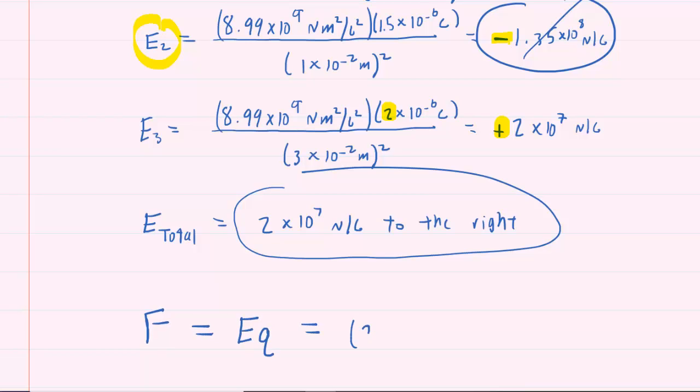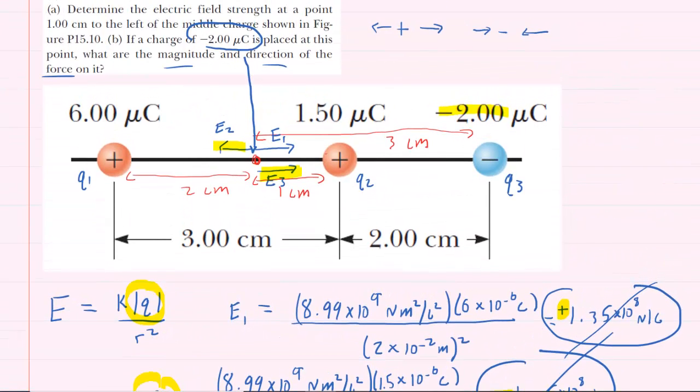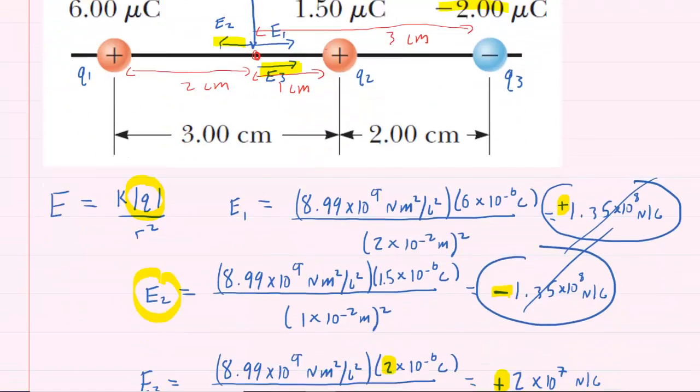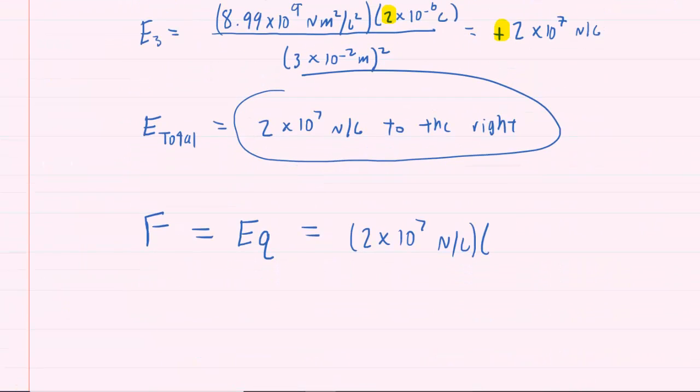Now we've already figured out the total electric field magnitude, it was 2 times 10 to the power of 7 newtons per coulomb, and then the value of q, that would be the charge that we're actually placing at that point, and that has a magnitude of 2 microcoulombs. Remember we're just using magnitude right now, so we're not going to plug in negative 2, we're just going to do 2 microcoulombs. So that's 2 times 10 to the minus 6 coulombs. You can multiply this out, and when you do so, you actually should get 4 times 10 to the power of 1 newtons, which of course is just 40 newtons.